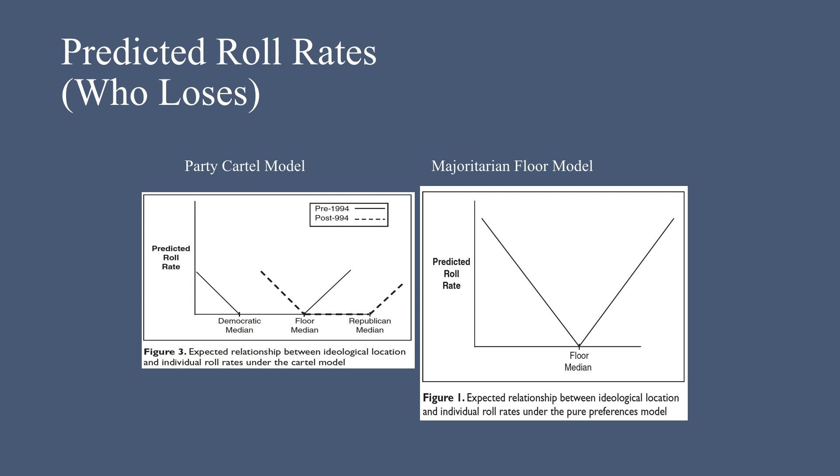They then go on to show how these two models have different predictions about something called roll rates, which is a fancy way of saying how often someone is on the losing side of a roll call vote. The key distinction is that the party cartel model predicts that the legislators between the floor median and the majority party median should not lose because bills on which they would lose are blocked from even being voted on.